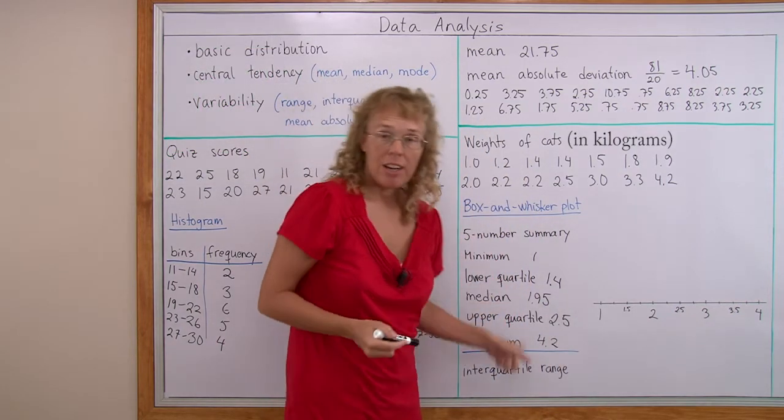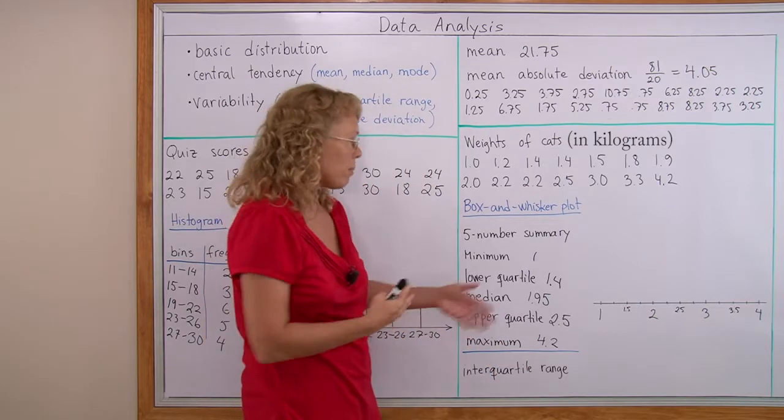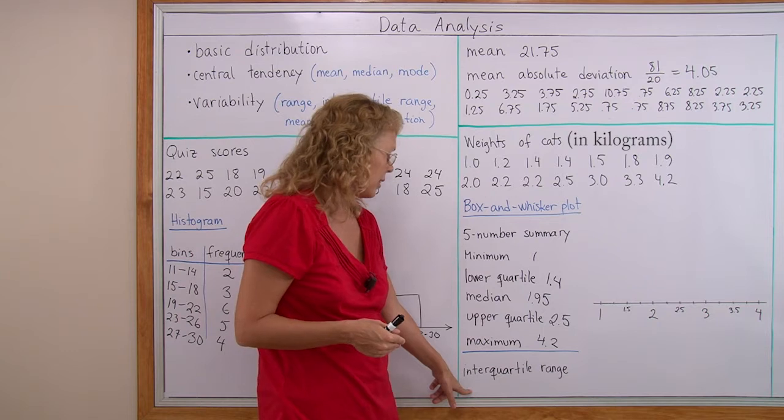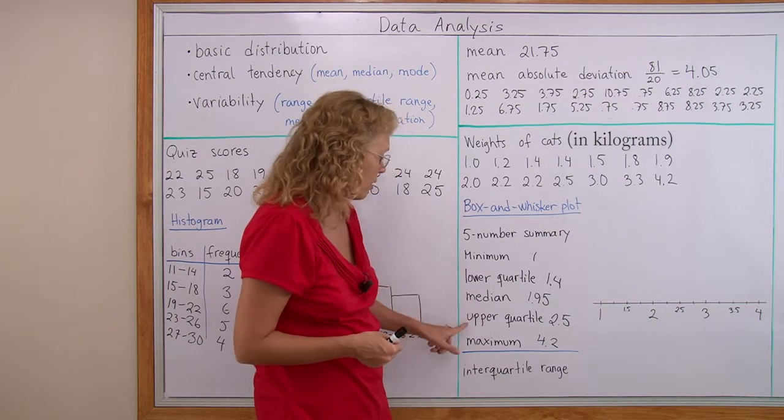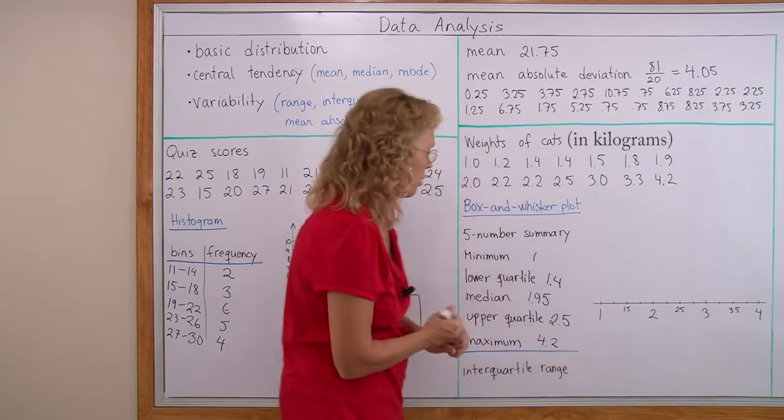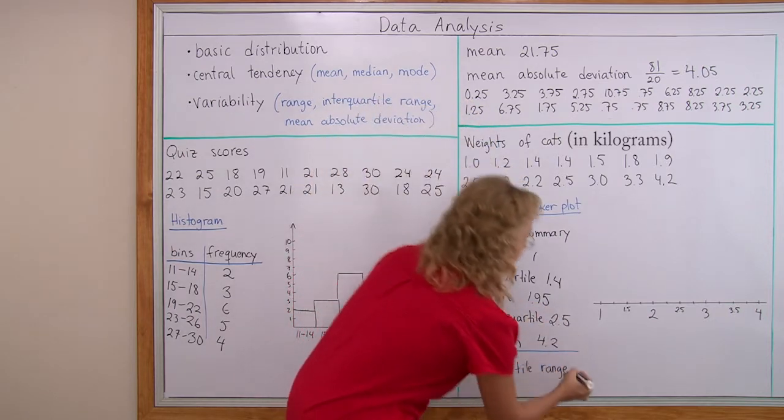Okay, with these five numbers I can now draw the box plot. This one I will calculate - it is the difference between lower and upper quartile. So 2.5 minus 1.4, so it is 1.1.